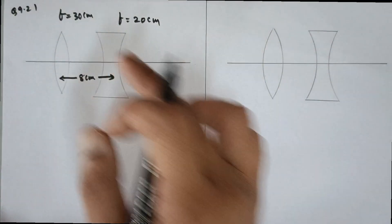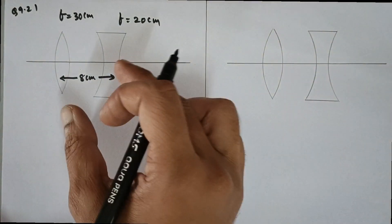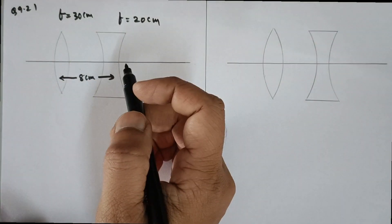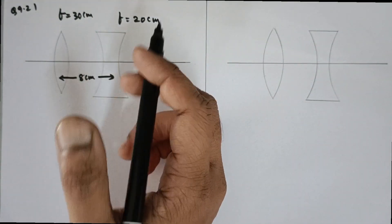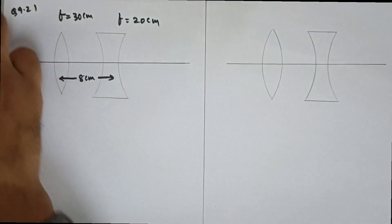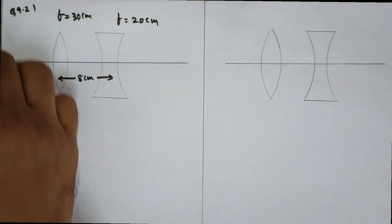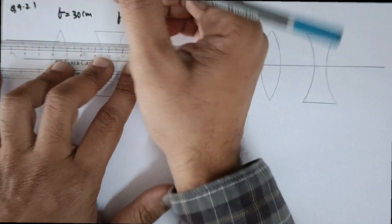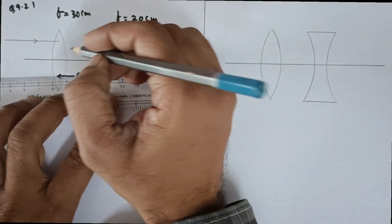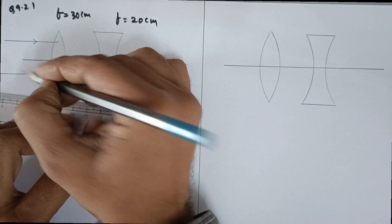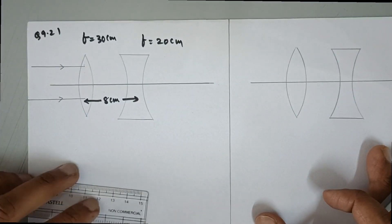We are also supposed to find the effective focal length, which I will do at the end of this part. Since the position of the object is not given, by default we will consider that the rays are parallel and the object is at infinity. So the rays coming from this side are parallel to the principal axis, meaning the object is at infinity.